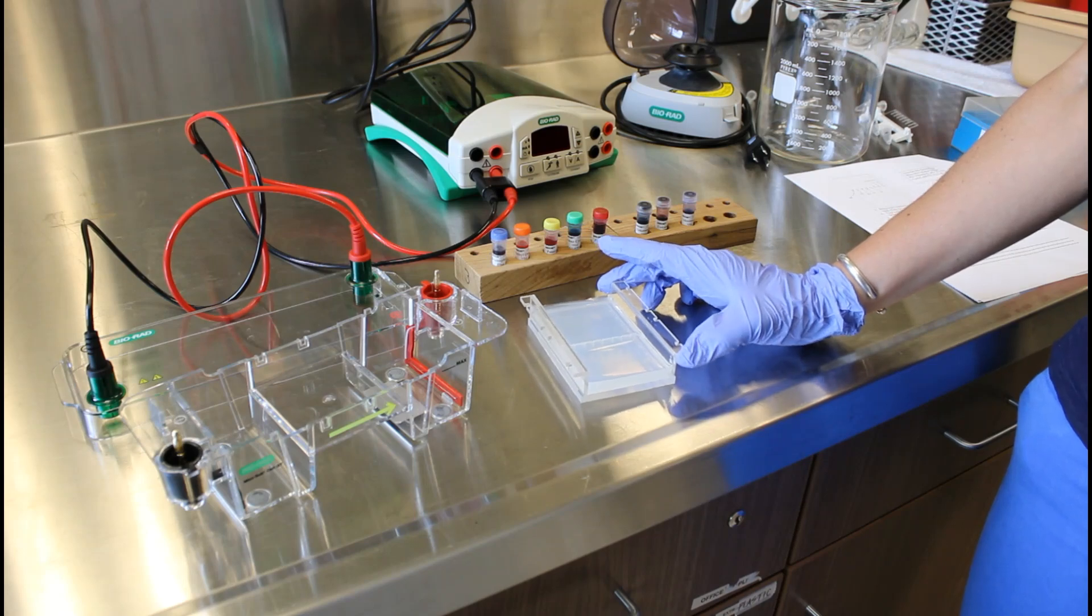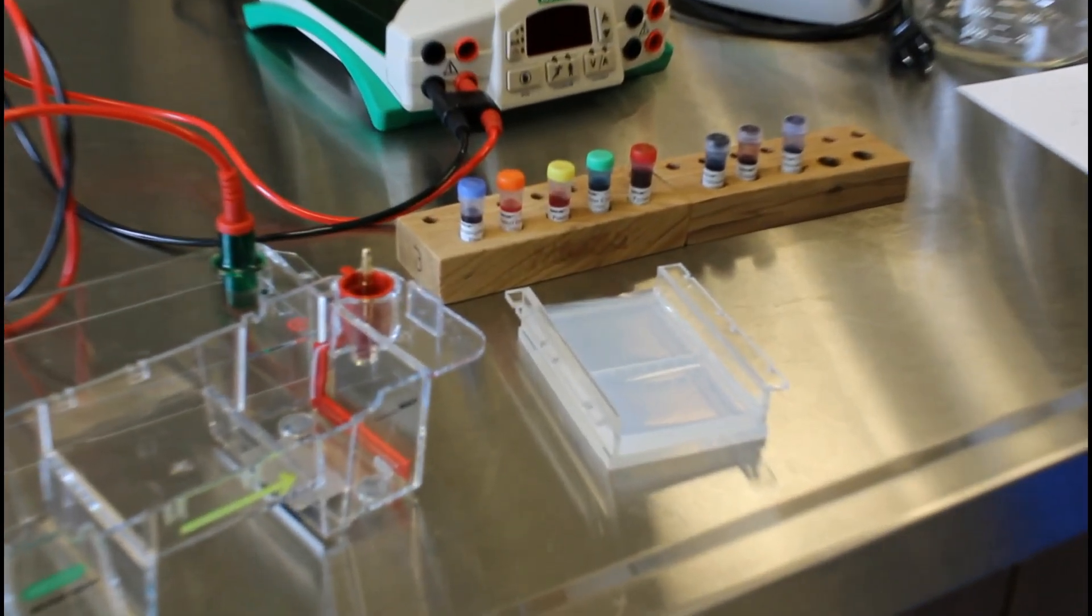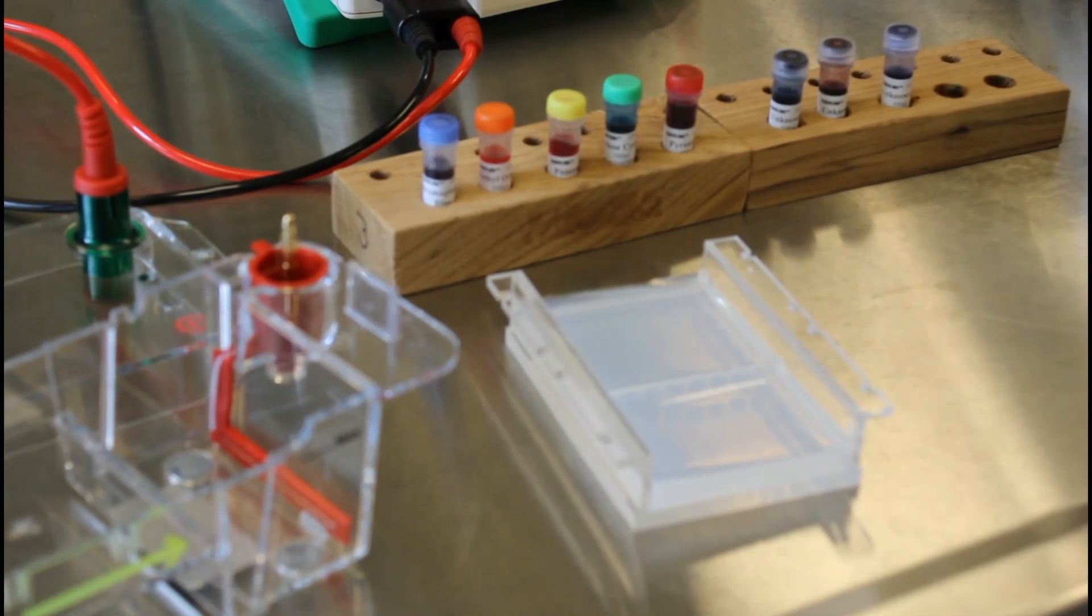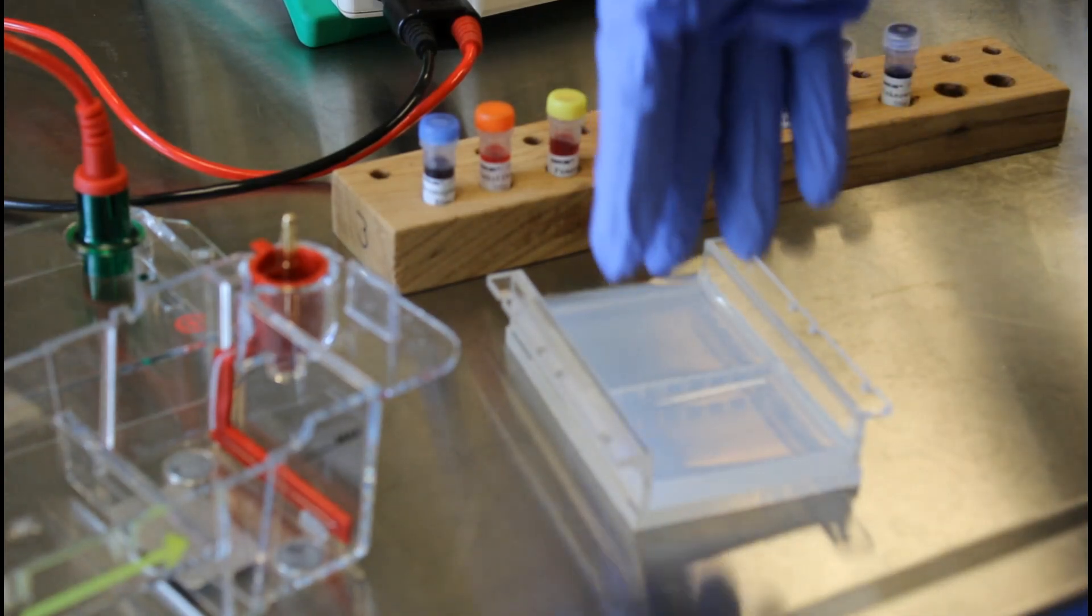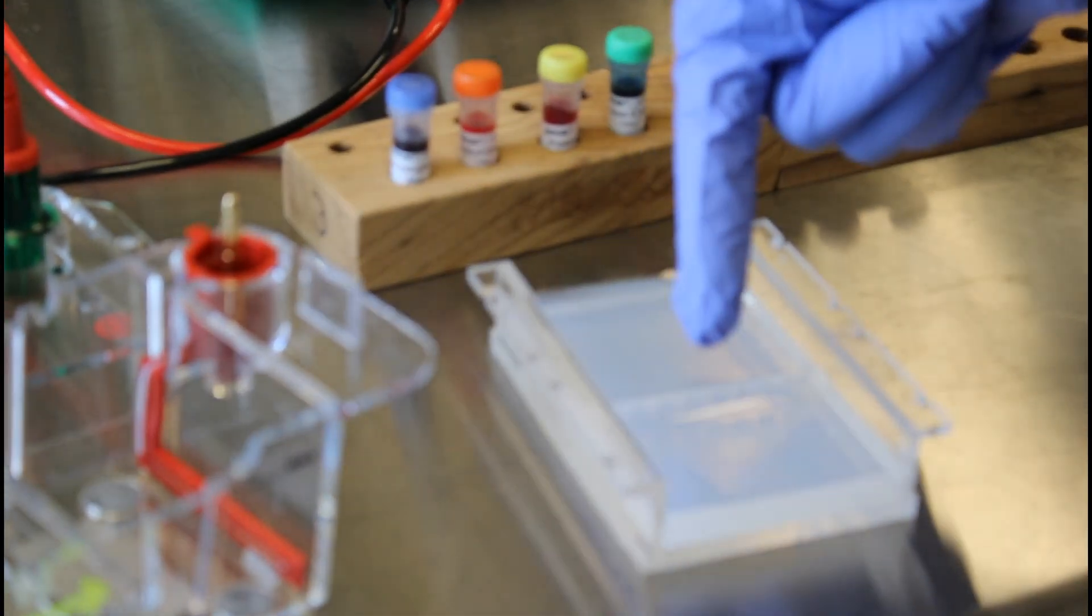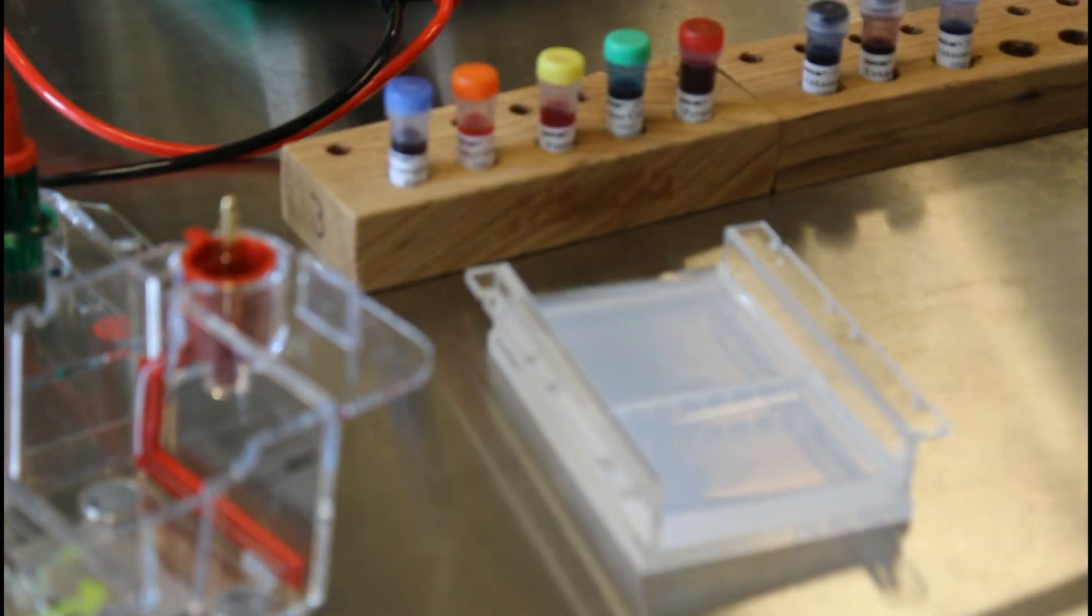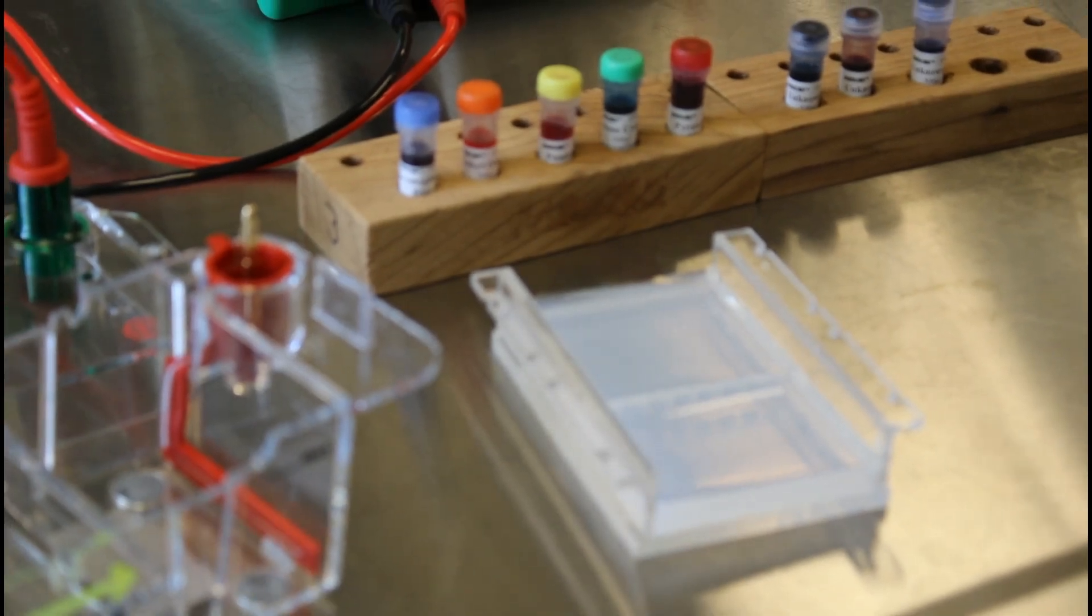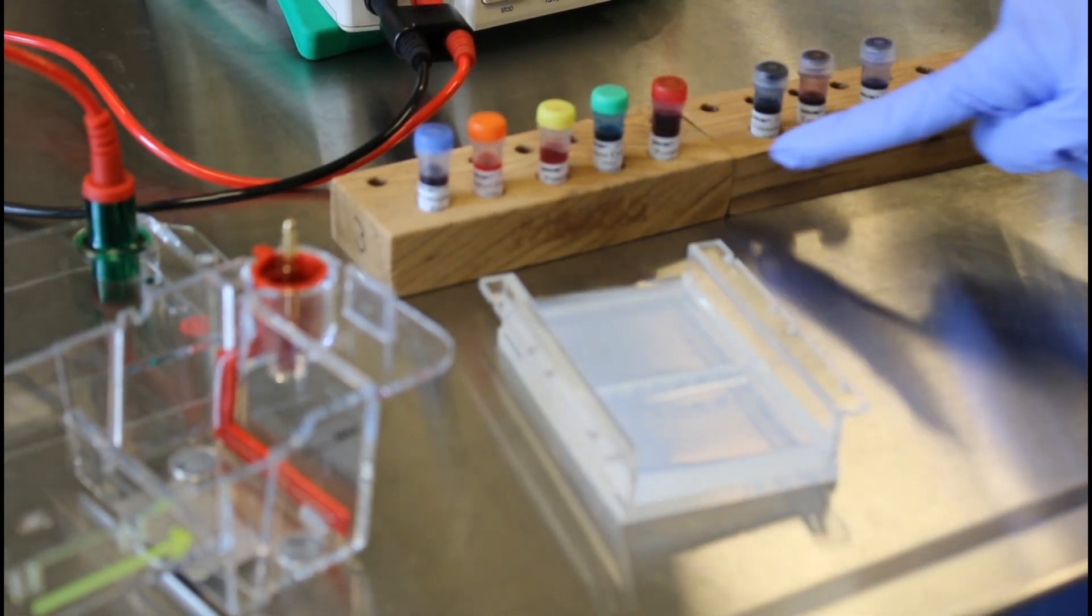So this is our gel. It's kind of like gelatin, you can see this translucent clear material. It's a lot like jello and we made this with a little comb inside so you can see there's one, two, three, four, five, six, seven, eight little holes that the comb left in the gel. Those are called wells and we're going to fill those little wells with these substances.